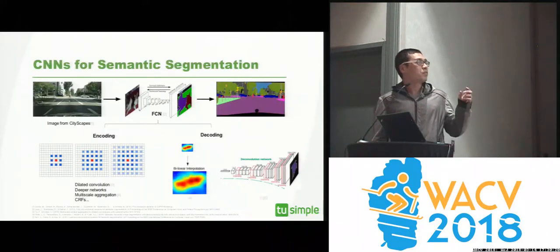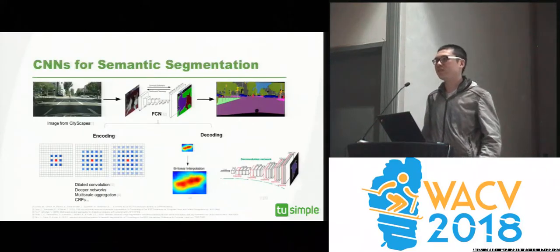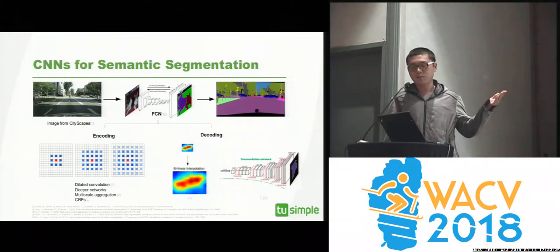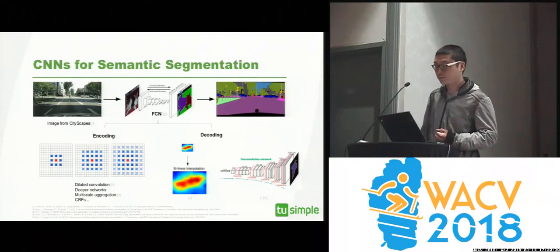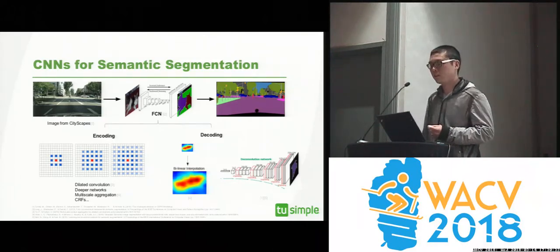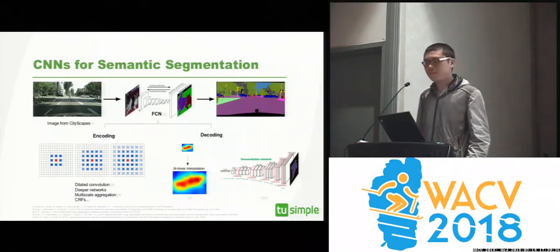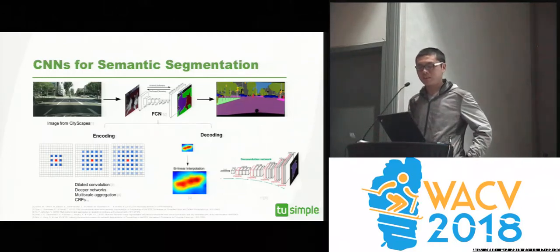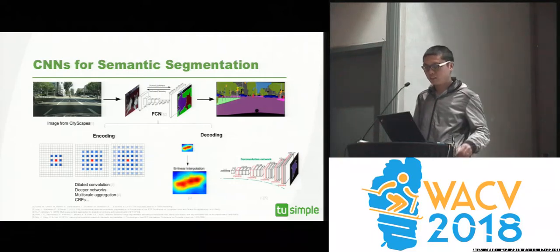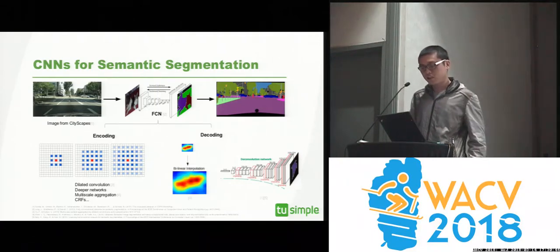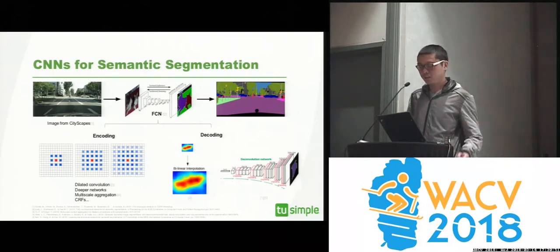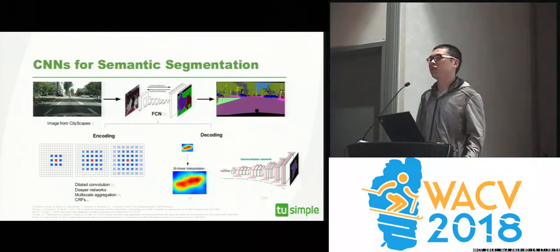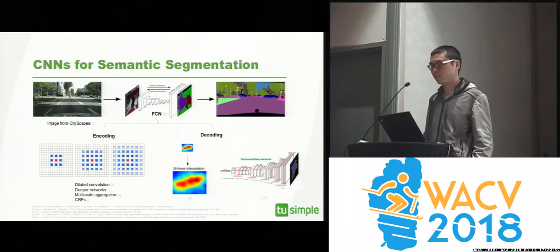Here is the overview of the current pipeline for using convolutional neural networks for semantic segmentation. Given an input image, we go through a fully convolutional neural network architecture and output a label map that has a categorical label for all of the pixels. Two important submodules in the FCN are feature encoding, where we use dilated convolutions, deeper networks, or multi-scale aggregations, and the decoding part, where people use bilinear upsampling or deconvolutional neural networks to recover the original spatial resolution.